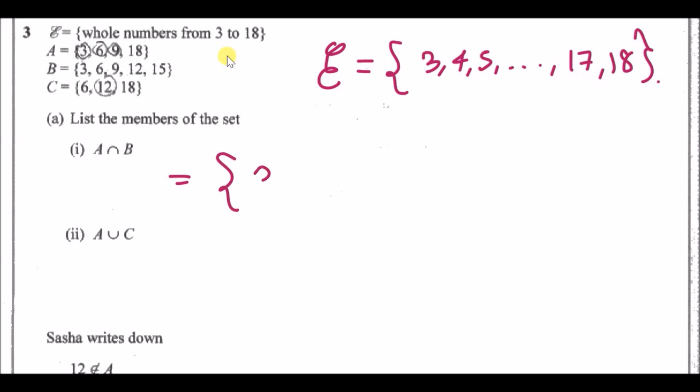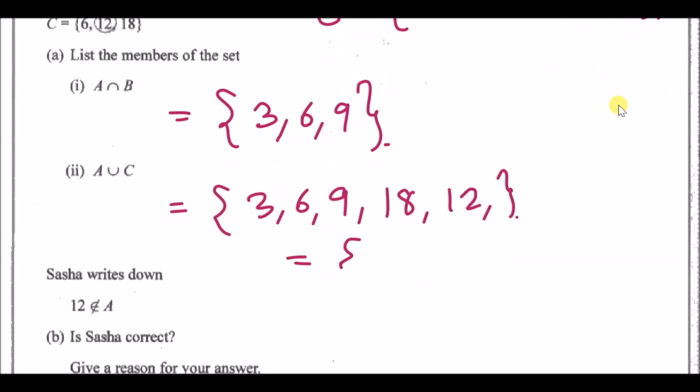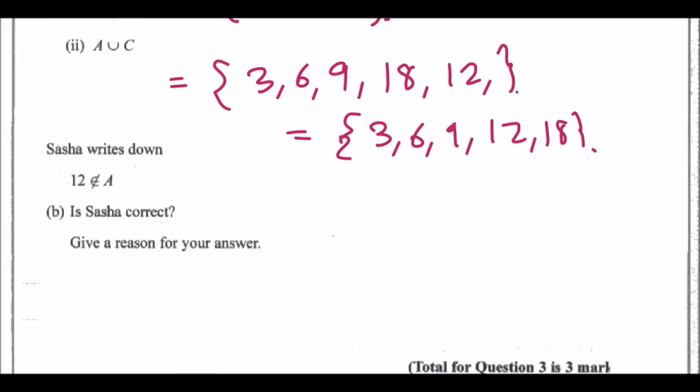Next bit: A union C. This means we need to write every single element that appears in A and C without repeating. In A we have a 3, a 6, a 9, and 18. Looking at C, we also have a 6 which we don't copy, we have a 12 which is unique. Always rewrite it in order just in case, so you've got 3, 6, 9, 12, and 18.